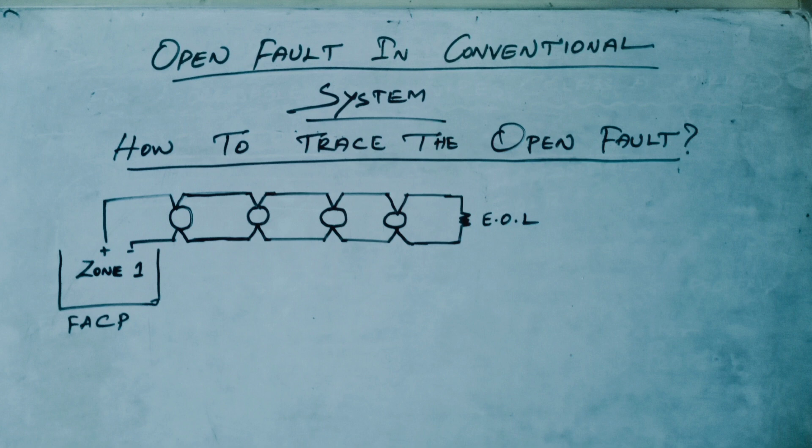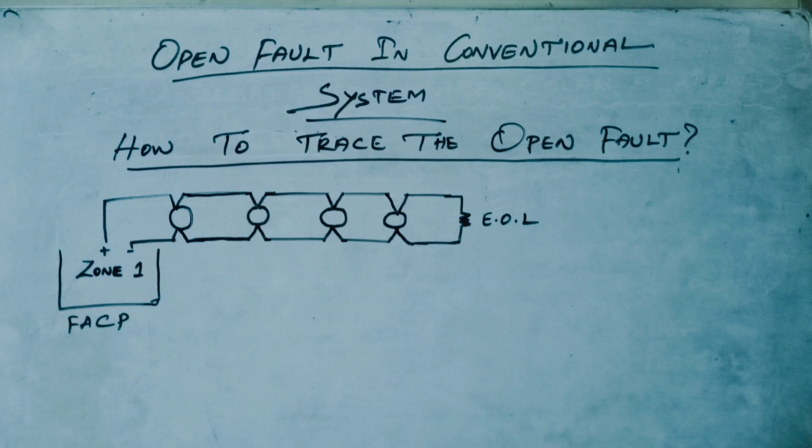It is very hard to find out where the open trouble is occurring when you have many devices installed in many rooms. In a conventional system, I recommend cutting off continuity and checking in the middle of the zone. Sometimes, if you are lucky, you can find the open fault at the very first device of the zone.